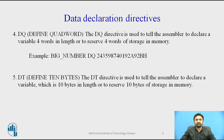The next one is DQ, that is Define Quad Word. This directive is used to tell the assembler to declare a variable 4 words in length, or to reserve 4 words of storage in memory. For example, 'big_number DQ' reserves 4 words of storage. The next is DT, Define Ten Bytes. The DT directive is used to declare a variable of 10 bytes in length or to reserve 10 bytes of storage in memory.